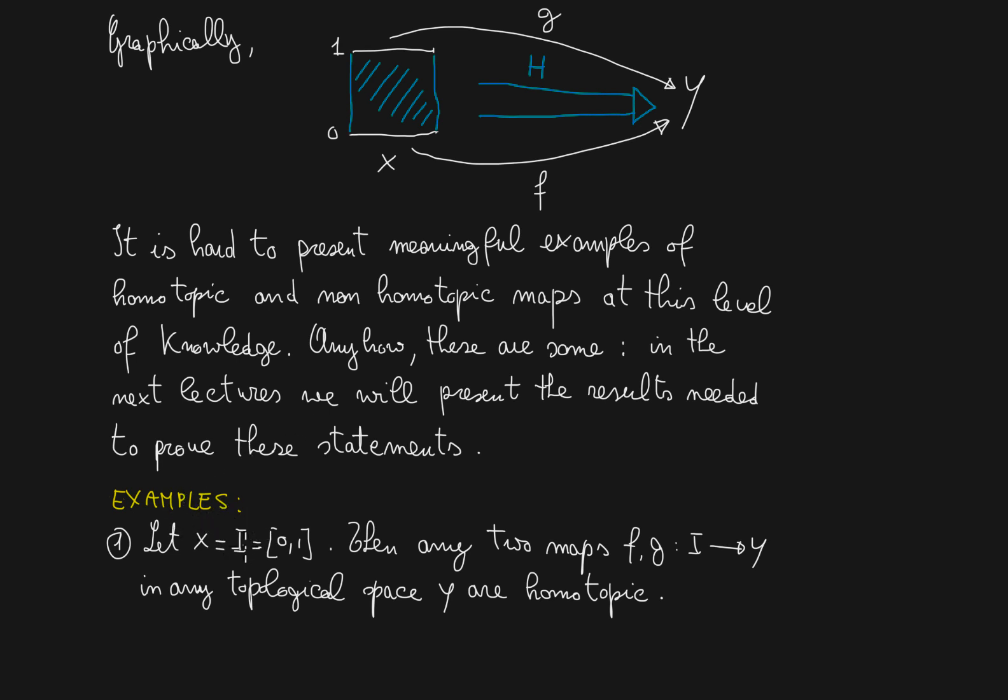Let's start with x equal to the unit interval itself. Then any two maps f, g from I to any y, in any topological space y, are homotopic. In this case, if x is the unit interval itself, I can take any two maps f and g, and I can always extend these two maps to this full square. In this case it will be I times I, filling up these two restrictions, filling up the cylinder in such a way the restriction to 0 and 1 will be f and g.